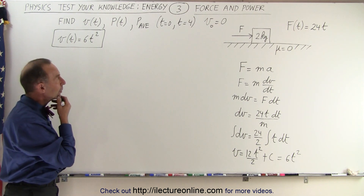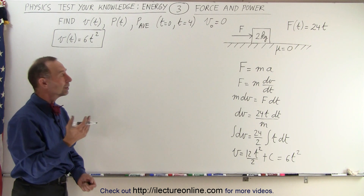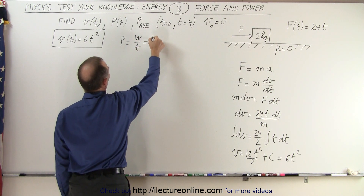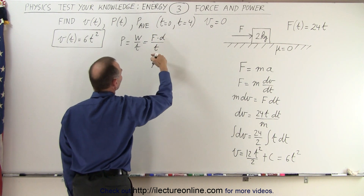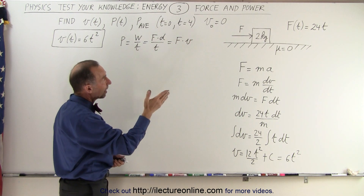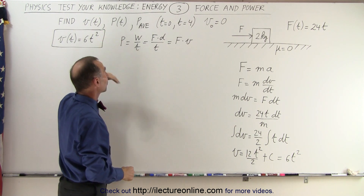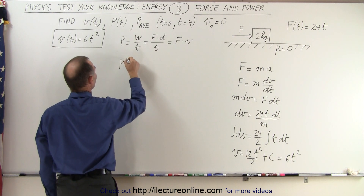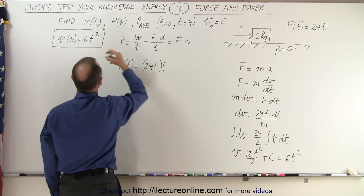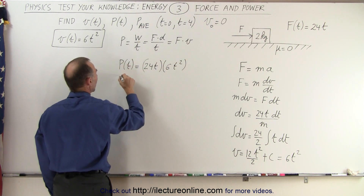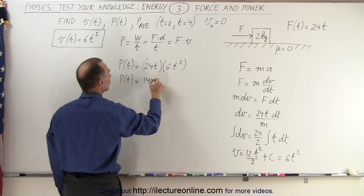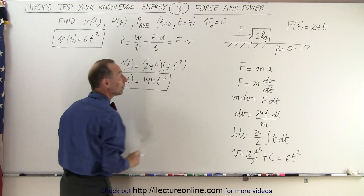Now we need to find power. Power by definition is equal to work over time. Work is force times distance, and distance over time is velocity, so power equals force times velocity. The force is a function of time and velocity is a function of time, so power as a function of time is the force — which is 24t — multiplied by the velocity — which is 6t squared. So the power as a function of time is equal to 144t cubed.